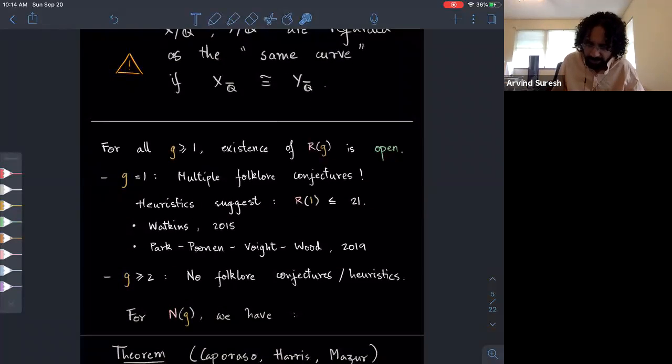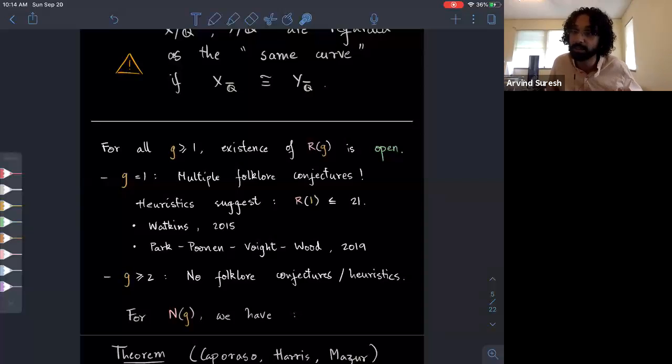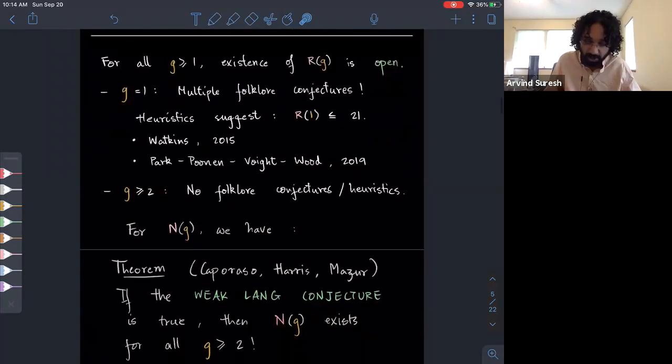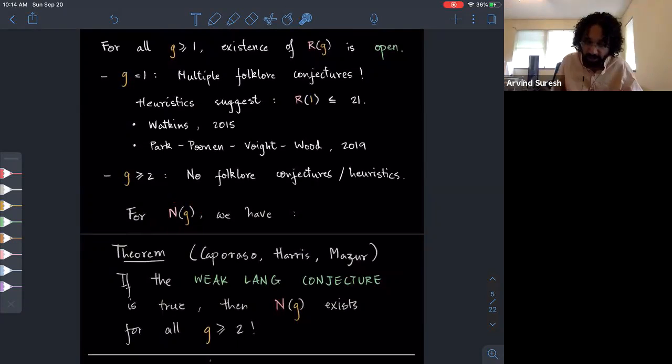I'm going to define these constants here. R of G is the largest integer R such that there are infinitely many genus G curves over Q satisfying, having Mordell-Weil rank at least R. Similarly, N of G is the largest integer N such that there are infinitely many genus G curves over Q having at least N Q rational points. I just want to clarify really quickly that if I have two curves, then I regard them as the same curve if they're isomorphic over Q bar, even if they're not isomorphic over Q. That's what this infinitely many here means. It means infinitely many that are pairwise non-isomorphic over Q bar.